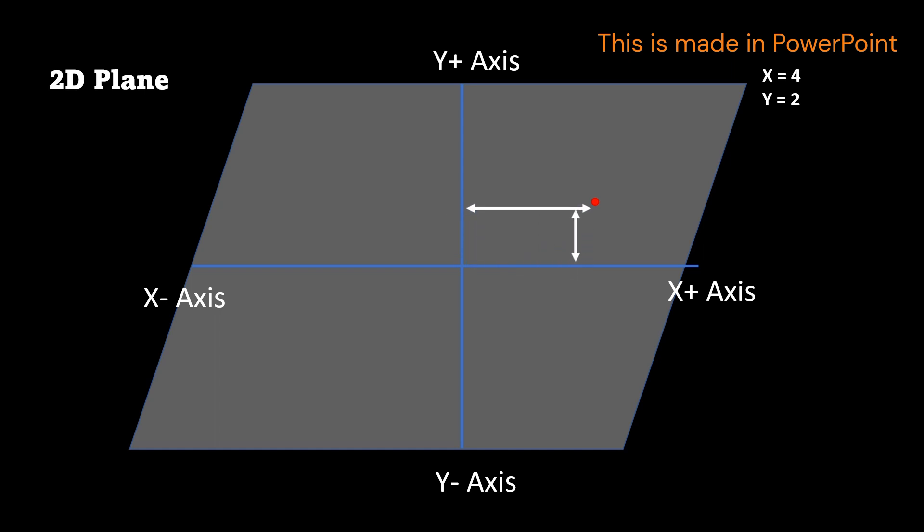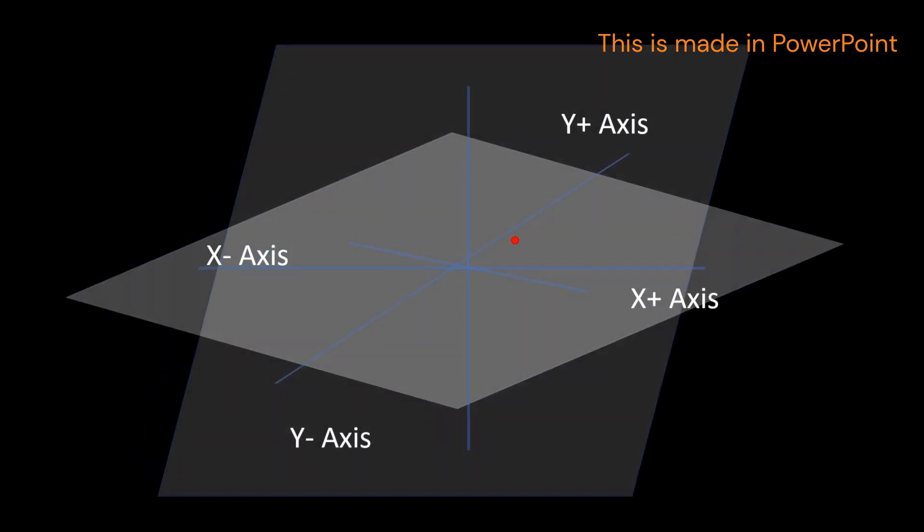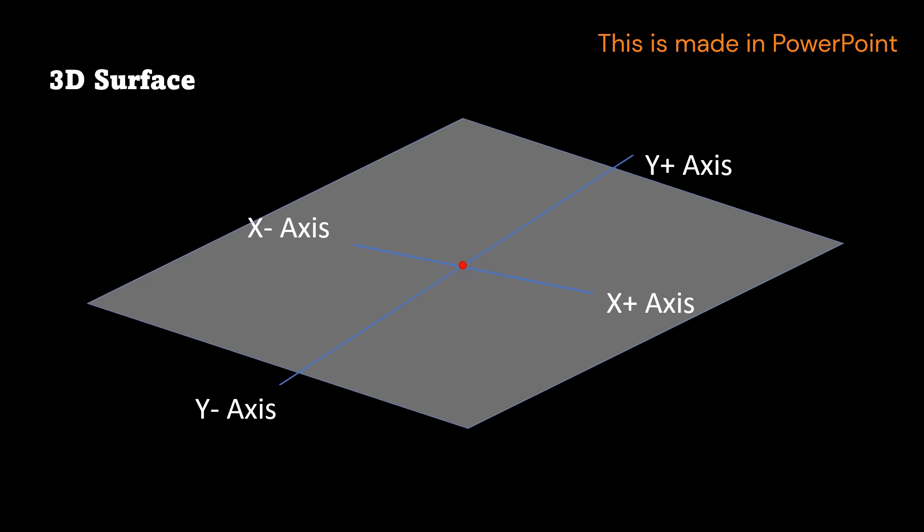Let's see this on a 3D surface. We have x equal to 4 and y equal to 2. Now we add a z-value and we want to draw a z-axis. Now let's move x to four places and y to two places as before, and then we move the point five places vertically on z-axis.